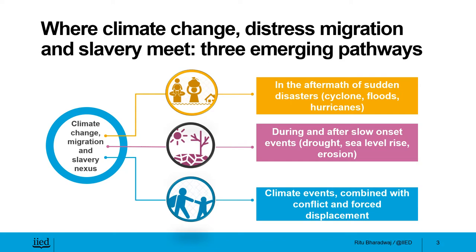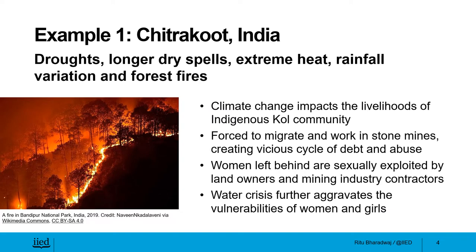I will illustrate this with the help of three case studies. The first case study is from Chitrikot in India, inhabited by a tribal indigenous community called Kol, who have traditionally been dependent on rain-fed agriculture and forests for their livelihood. This region has recently been exposed to droughts, longer dry spells, extreme heat, and rainfall variation, leading to frequent forest fires and damage to crops. In the absence of alternate livelihood options, the Kol are forced to migrate and work in nearby stone mines under inhuman, polluting, and exploitative work conditions. People working in these mines often come back with lung diseases caused by constant inhaling of dust and polluted air.